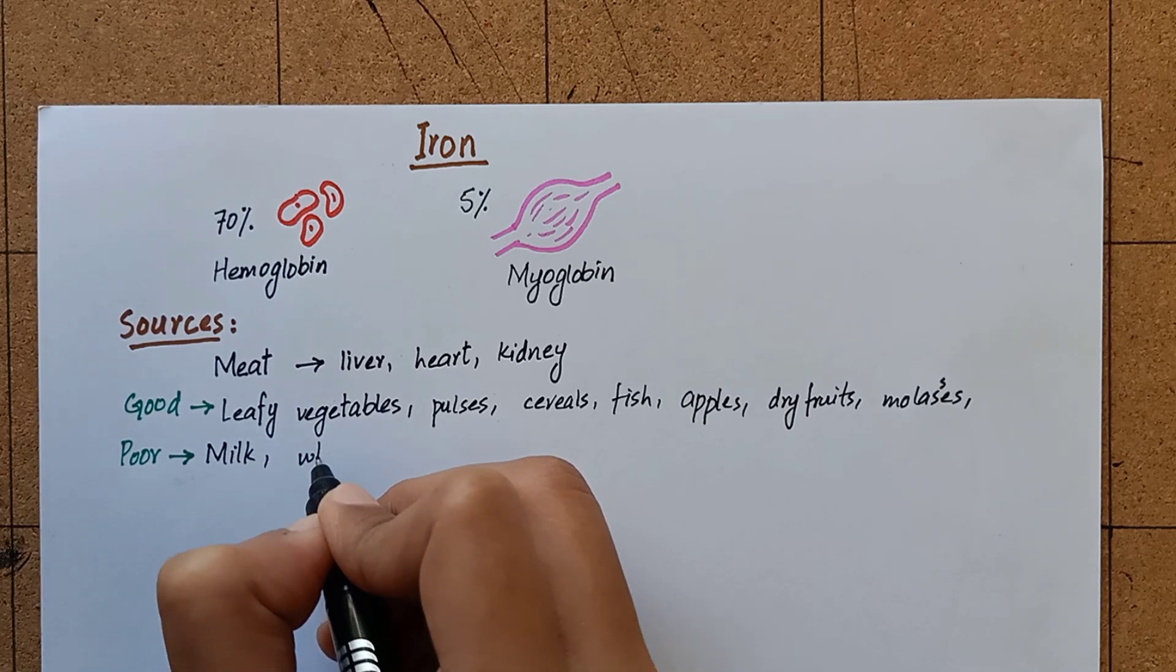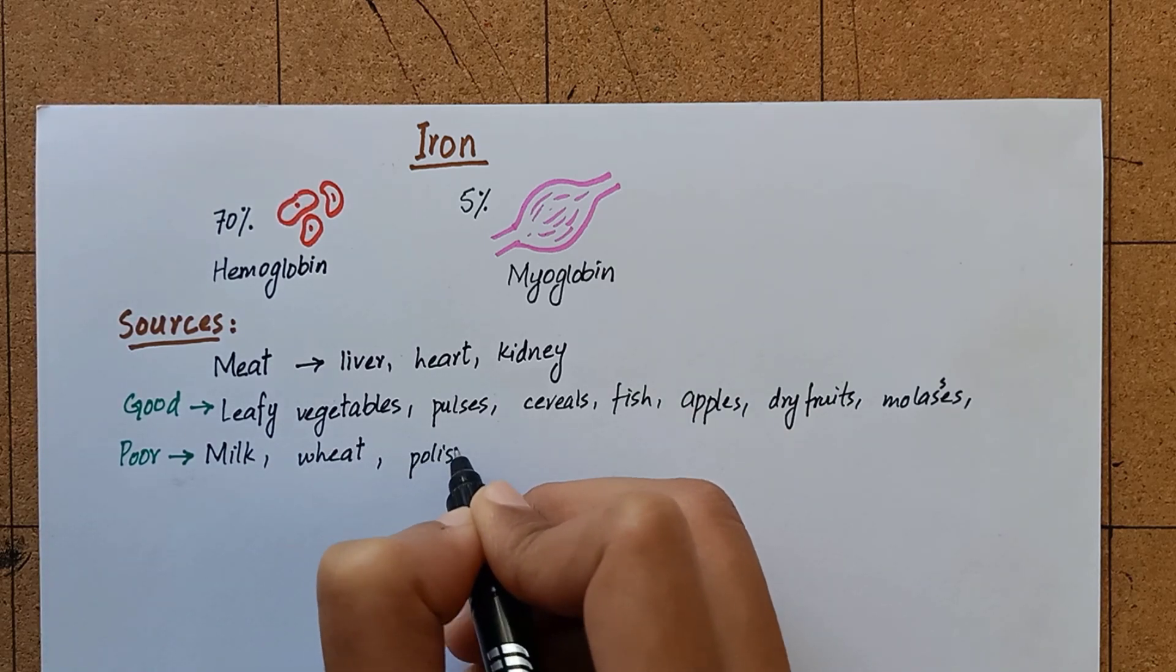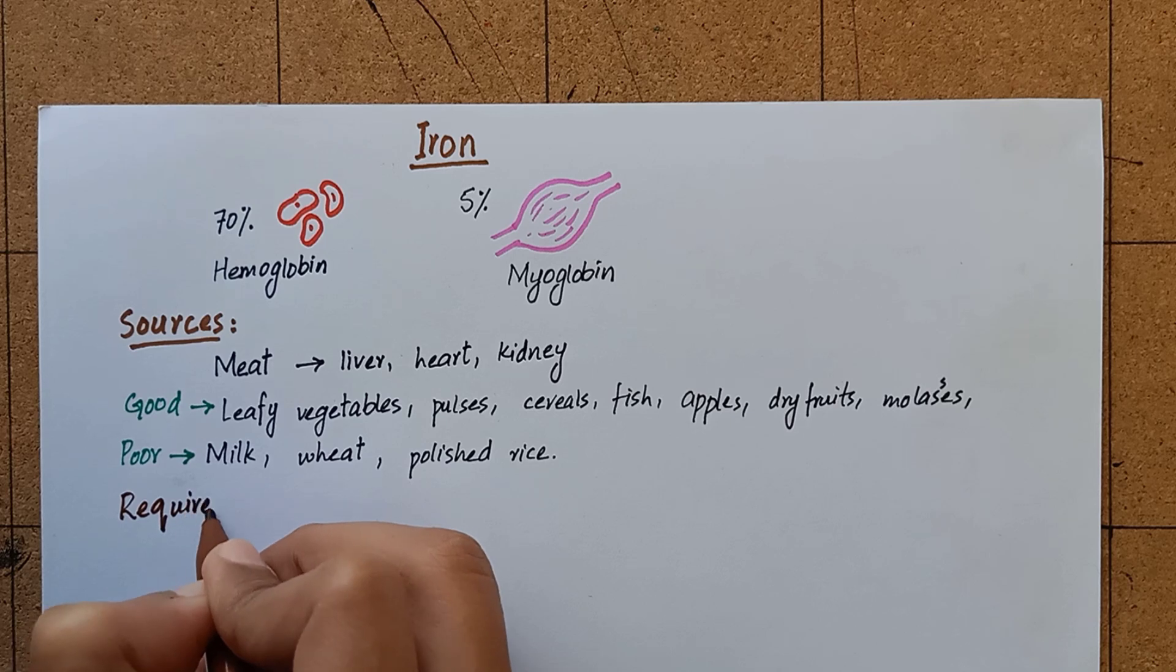While milk, wheat, and polished rice are considered as poor sources of iron.